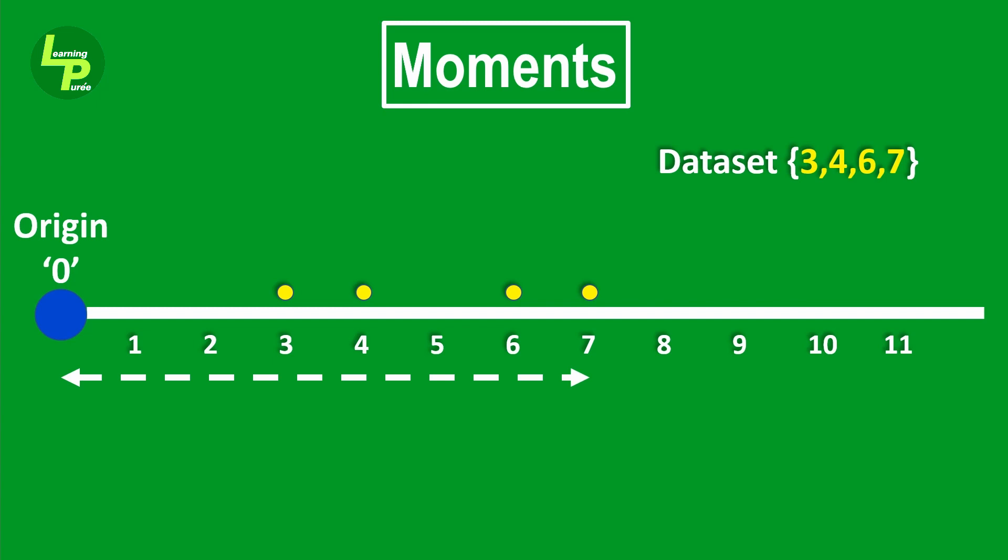To find the net effect of these data points, we use the concept of central tendency which in this case is the arithmetic mean. The arithmetic mean is 5 for this data set.